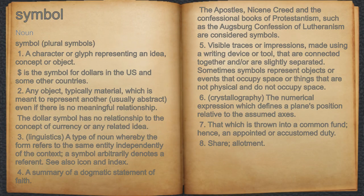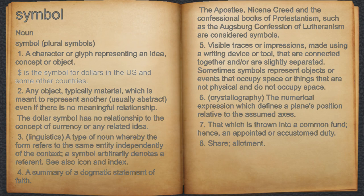Symbol. Noun. 1. A character or glyph representing an idea, concept or object. For example, the dollar sign is the symbol for dollars in the U.S. and some other countries. 2. Any object, typically material, which is meant to represent another, usually abstract, even if there is no meaningful relationship.